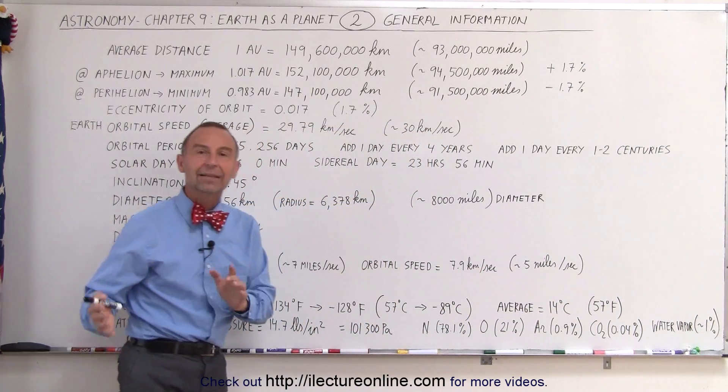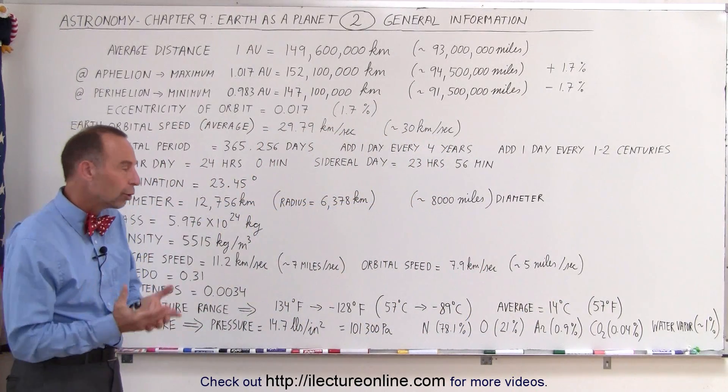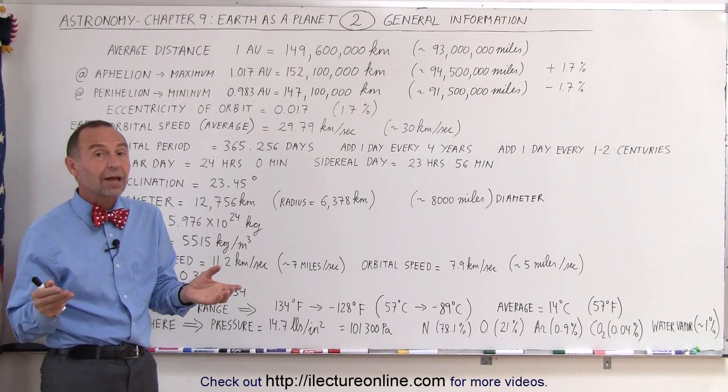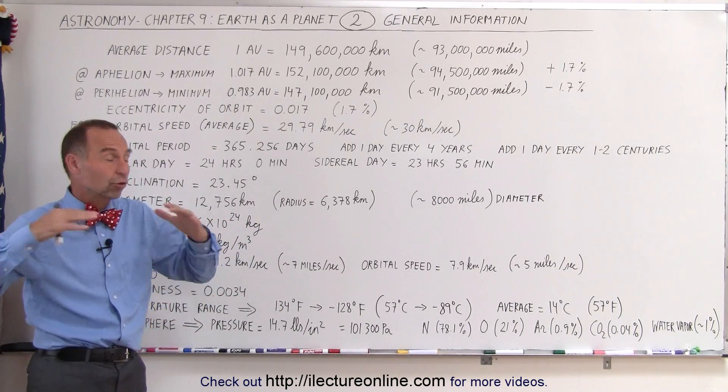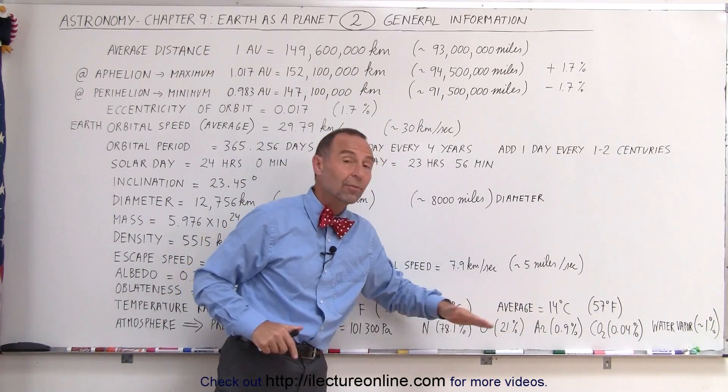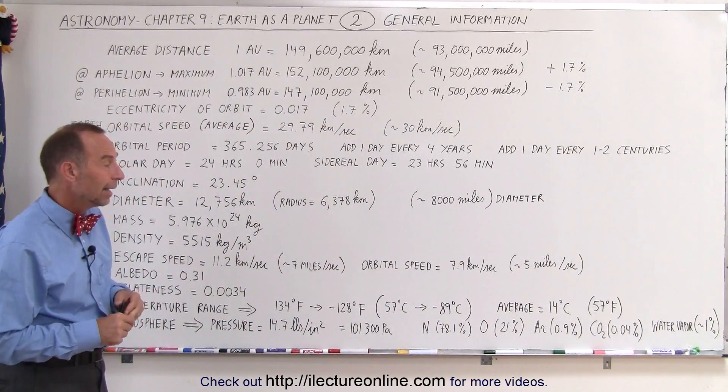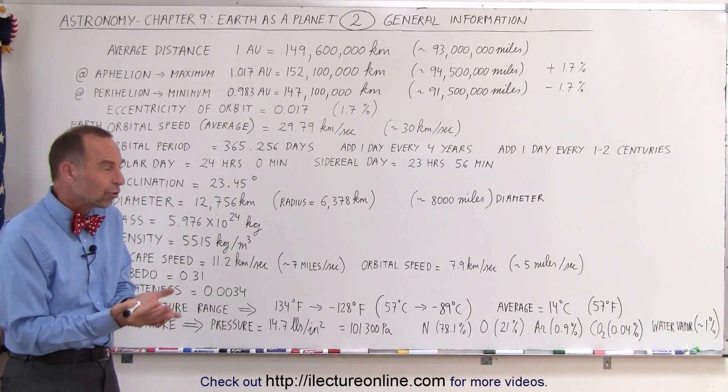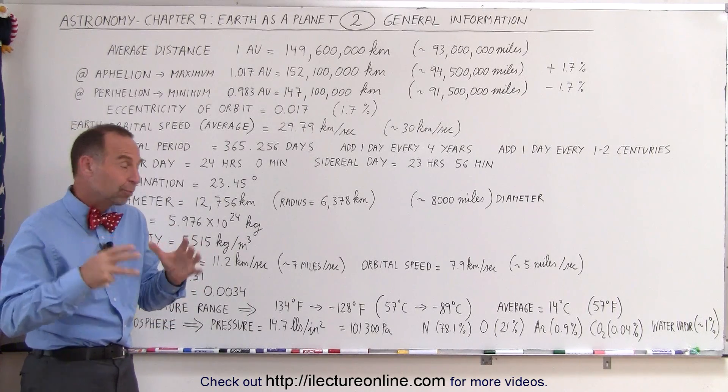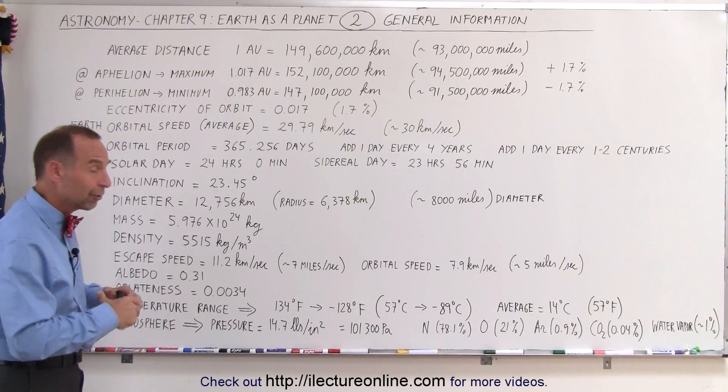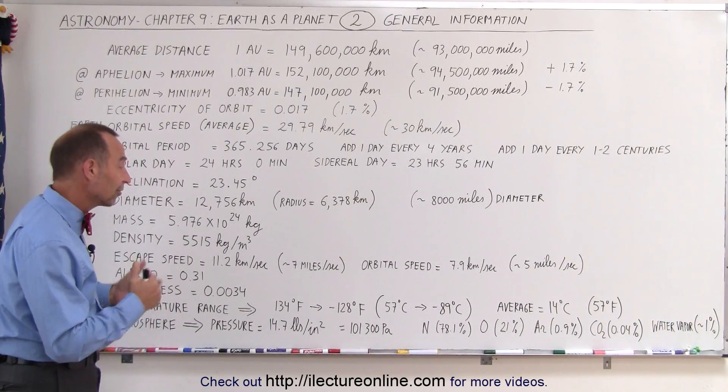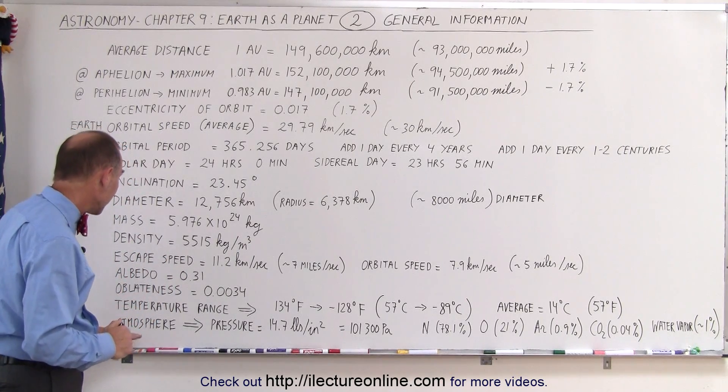However, the average temperature is about 14 degrees centigrade, 57 degrees Fahrenheit. This, of course, daytime, nighttime, summer, winter all around the globe, the average temperature, but it turns out that the vast majority of the Earth's surface stays actually rather close to this temperature, probably within 10 to 20 degrees most of the time, and so you can see that the Earth's temperature on average is just perfect for human life, for most life on the Earth, and so therefore it's an interesting planet in that respect. And finally, the atmosphere.